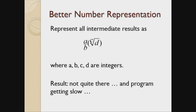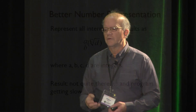What I proposed was, instead of just using an integer representation, represent all the intermediate calculations in the form of A divided by B times the c-th root of D, where all four of those numbers are integers. I never actually do that calculation — I just carry them along with the rules of fractions and powers and do the calculation in that form.